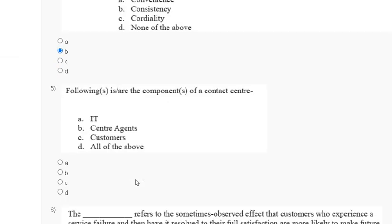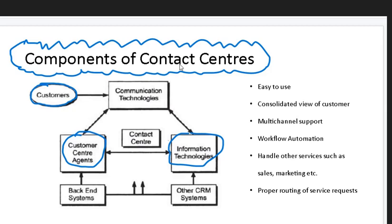Question number five: which of the following are components of a contact center? First: information technology (IT). Second: center agent. Third: customer. Fourth: all of the above. The explanation for question number five is here. The components of a contact center include customer, communication technology, center agent, and information technology.